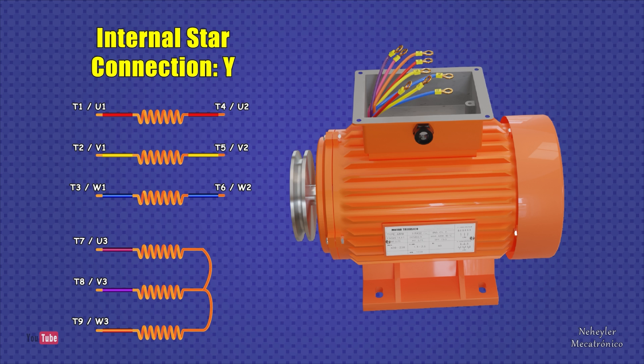These motors generally have labels on their terminals from T1 to T9 if it is based on the NEMA standard, or have letters U, V, and W if it is manufactured under the IEC standard.